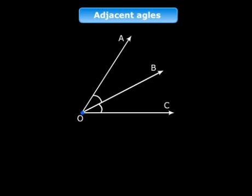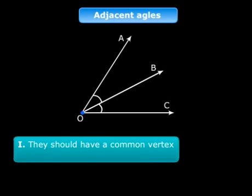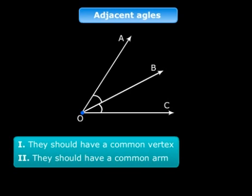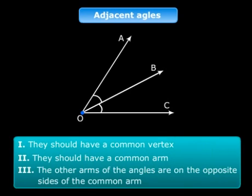Now let me first give you the conditions for two angles to be adjacent. Listen carefully. They should have a common vertex. They should have a common arm, and the other arms of the angles are on the opposite sides of the common arm.